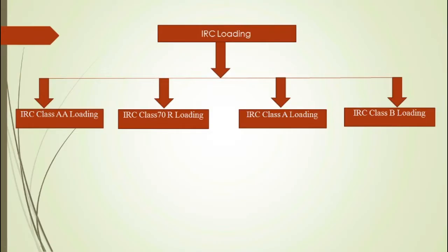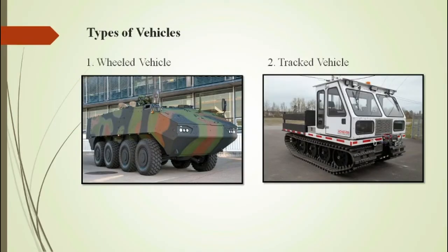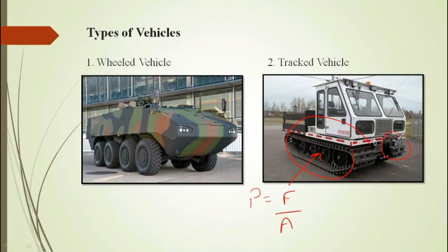Before we discuss the loading standards, let us first understand wheeled vehicles and track vehicles. Wheeled vehicles are vehicles which move on wheels, which we are very familiar with. Track vehicles, on the other hand, have metal belts driven by wheels. The need for track vehicles arises because due to a large contact area, the pressure generated is less — since pressure equals force upon area. Hence the vehicle has very less chance of sinking in snow or mud, which is very useful for army tanks.